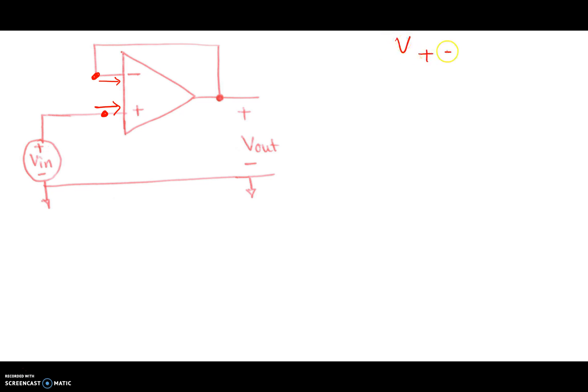So ideal op-amp says V plus equals V minus. In this case, since the reference node is down here and the voltage source is given at V in, the V plus is equal to V in. By that token, this node right here is also V in.